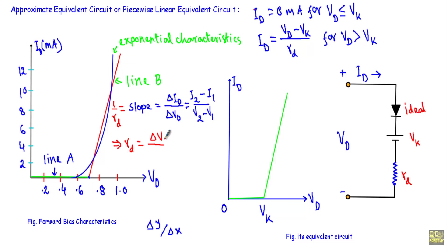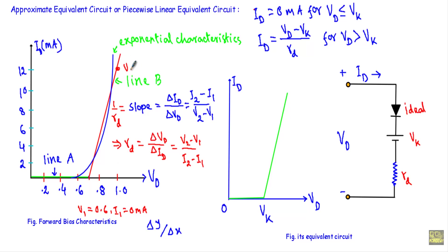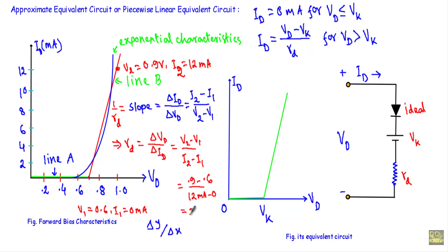How do we calculate the dynamic or forward resistance of a diode? The reciprocal of dynamic resistance is given by change in diode current divided by change in diode voltage. Taking the reciprocal, RD equals delta VD divided by delta ID, which equals (V2 − V1) / (I2 − I1). For example, when V1 = 0.6 V, I1 = 0 mA, and when V2 = 0.9 V, the diode current ID is nearly 12 mA (this is I2). So RD = (0.9 − 0.6) / 12 mA = 25 Ω.